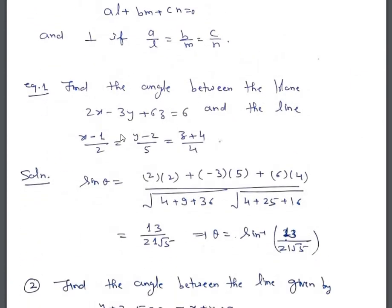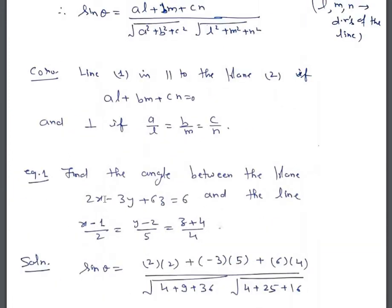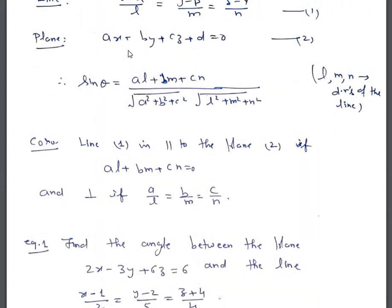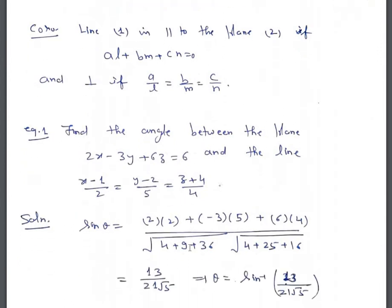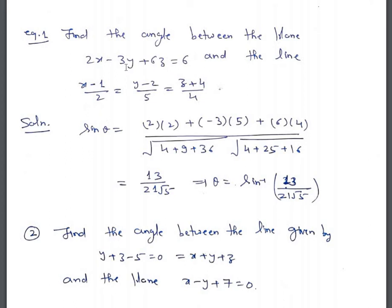First example: find the angle between the plane 2x minus 3y plus 6z equals 6 and the line x minus 1 upon 2 equals y minus 2 upon 5 equals z plus 4 upon 4. Here A, B, C are 2, minus 3, 6 and L, M, N are 2, 5, 4. Applying the formula: sine theta equals (2×2 plus (minus 3)×5 plus 6×4) upon (sqrt(4 plus 9 plus 36) times sqrt(4 plus 25 plus 16)), giving 13 upon 21 root 5. So theta equals sine inverse of 13 upon (21 root 5).